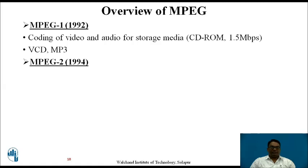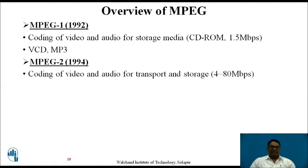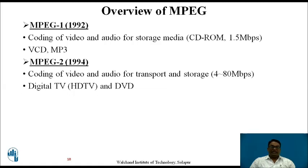MPEG 2 was developed in 1994. It also deals with coding of video and audio for transport and storage at a data rate of 4 to 80 Mbps — it is transmitted and received at that data rate. Examples are digital television, that is HDTV, and DVD.